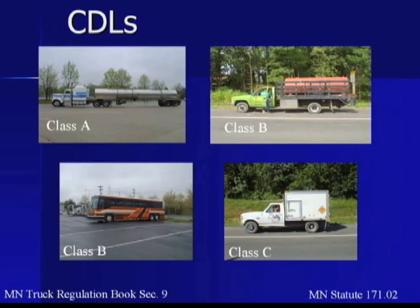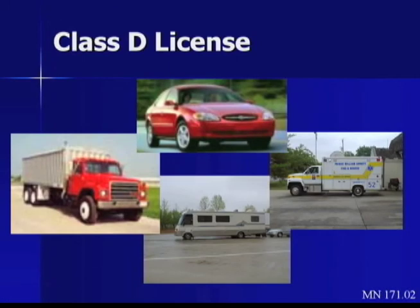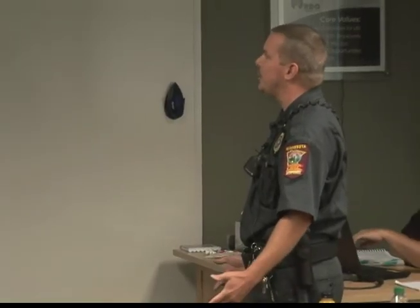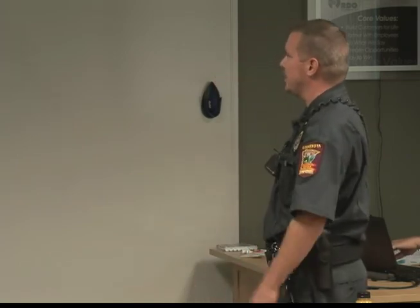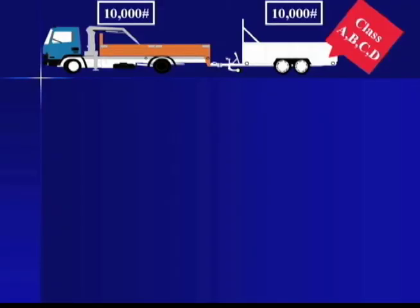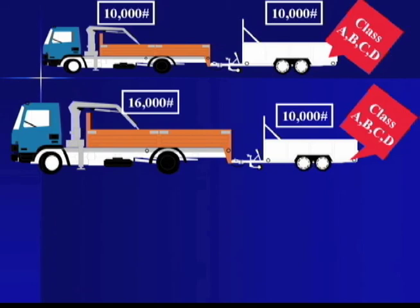For CDLs, you've got your Class A, your Class B — passenger and property — and your Class C, which we don't deal with a lot. A Class D license covers smaller vehicles, anything under 26,000 pounds, towing a trailer under 10,000 pounds. Your Class D covers everyone. If you're right at 26,000 pounds, you still don't need a CDL. It's only at 26,001 that you're drawn into a CDL requirement.